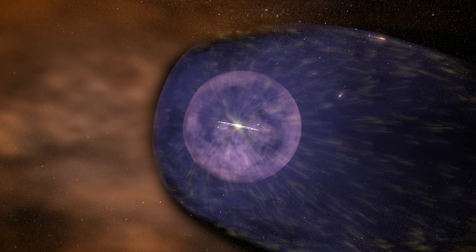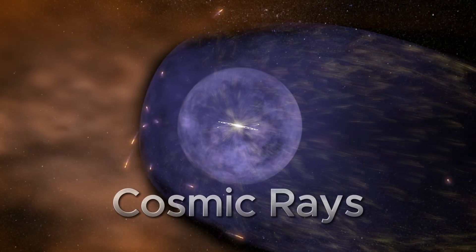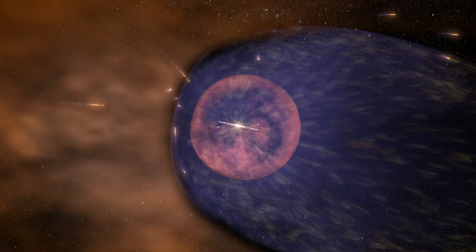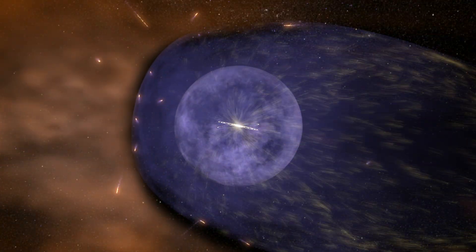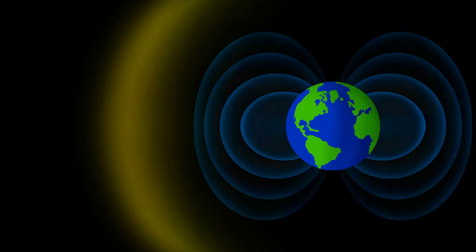Right now, tiny particles from deep space are passing through you. They're called cosmic rays, high-energy atomic nuclei travelling at near-light speed. On Earth's surface, we're safe thanks to our atmosphere and magnetic field. But in space? They're a nightmare.